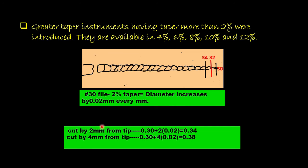Suppose if we cut the instrument 4 mm from the tip, the only change that we have to make is we will multiply 4 by 0.02 instead of 2, and this will give us 0.38. So it's simple.